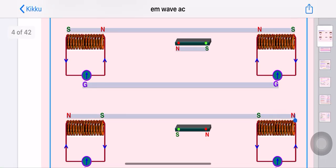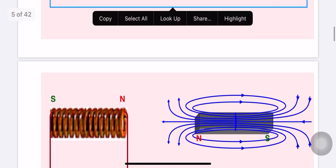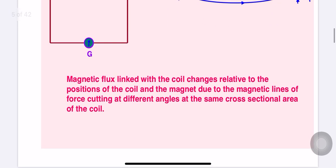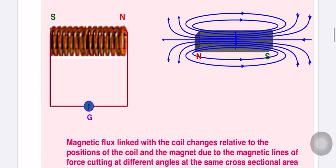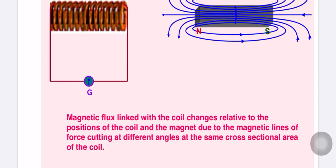Let us see what happened in this experiment. Whenever there is a relative motion — when the bar magnet is given a to-and-fro motion towards the coil — we noted that there was deflection in the galvanometer. This deflection is only possible when there is a potential voltage or EMF, and hence a current is produced in the circuit.